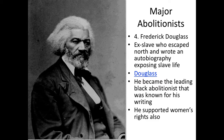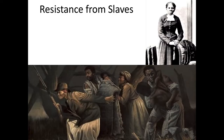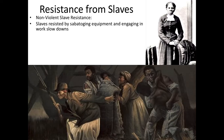Now let's talk about resistance from slaves. One form of slave resistance was to sabotage equipment — breaking the cotton gin on purpose, breaking tools the master gave them, or engaging in a work slowdown, working as slowly as possible without the master knowing. This could be pulled off more easily than you'd think, because masters believed slaves were intellectually inferior. Slaves could play on that stereotype and act too dumb to do the job well, getting away with the slowdown.